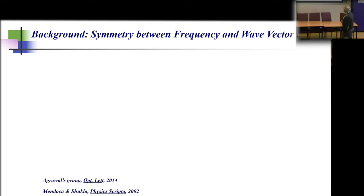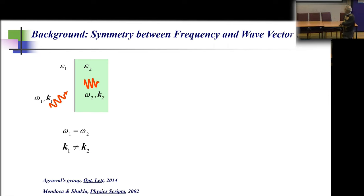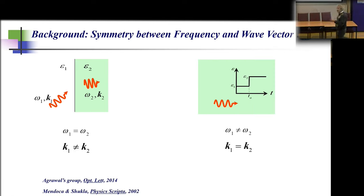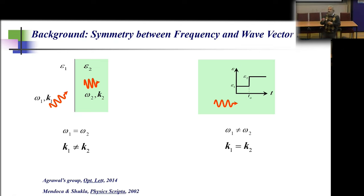There's an interesting relationship between frequency and wave vector when comparing spatial and temporal interfaces. At a spatial interface, the refracted wave has the same frequency as the incident one, but wave vectors differ — k₁ ≠ k₂, so different wavelengths. However, for the temporal interface, the opposite occurs: the conserved quantity is momentum. k₁ equals k₂, so the wavelength stays the same, but the frequency of the wave changes.